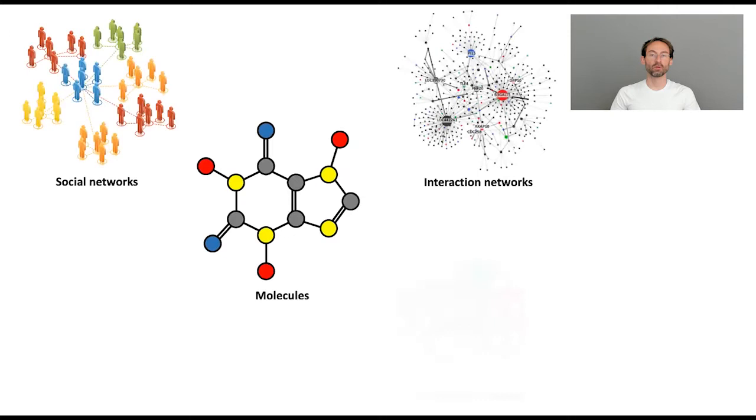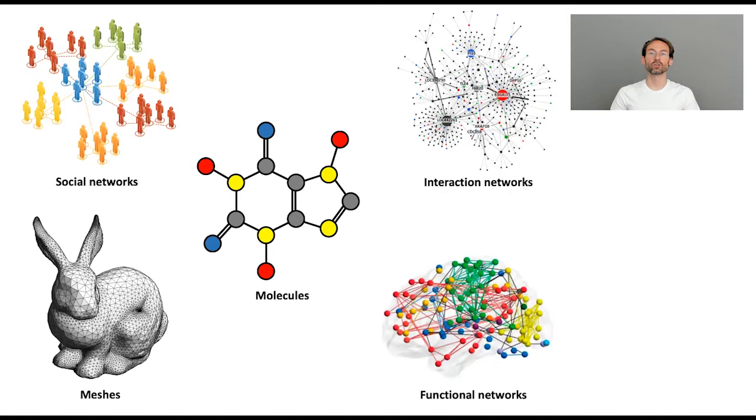Molecules are just one example of graph structured data. And in fact, we see graphs everywhere. Probably the most prominent examples are social networks where the nodes are users and edges are social relations or interactions between them. But we also encounter graphs or networks in biological sciences where we look at the interactions between biomolecules such as proteins, in computer graphics and computer vision where we use graphs with maybe a bit more structure such as meshes to represent three dimensional objects, in brain imaging where the graphs model functional networks and many, many more applications.